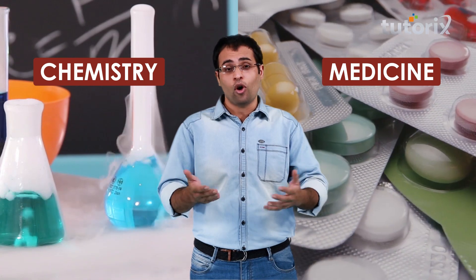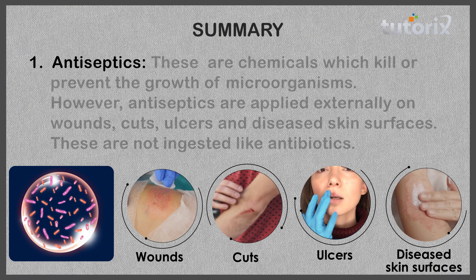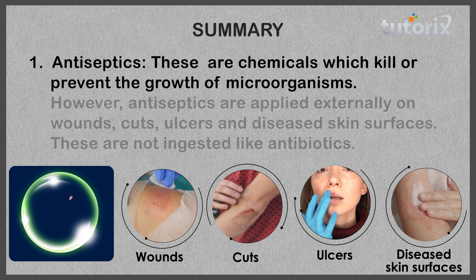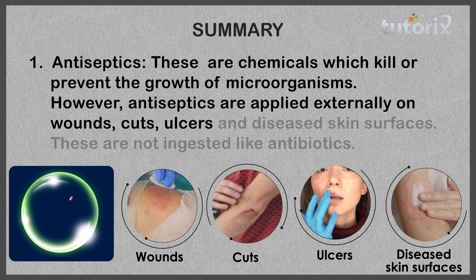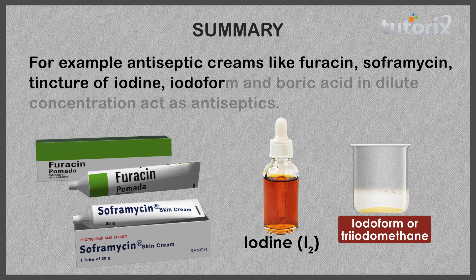Let's do a quick recap of what we have learned today. Antiseptics: these are chemicals which kill or prevent the growth of microorganisms. However antiseptics are applied externally on wounds, cuts, ulcers, and diseased skin surfaces — these are not ingested like antibiotics. Examples include antiseptic creams like furacin, soframycin, tincture of iodine, iodoform, and boric acid in dilute concentration.